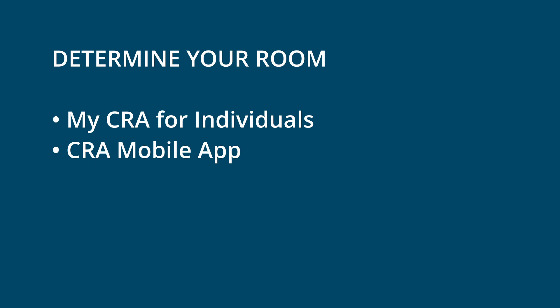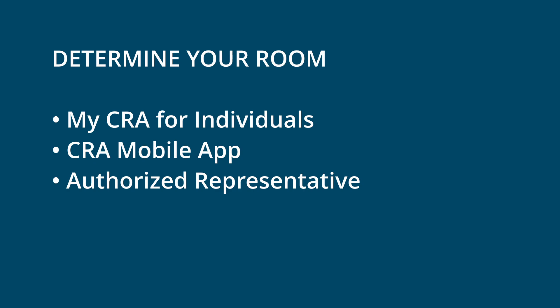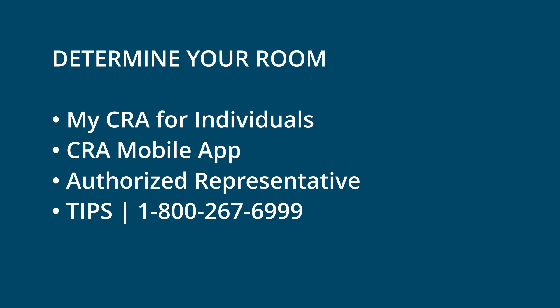CRA also has a mobile app that provides the same information. If you work with an accountant and have an authorized representative, that person can also get the information directly from CRA. There's also a 1-800 tips line — the number is 1-800-267-6999 — and they will be able to provide you with the most up-to-date information as to what room you have.